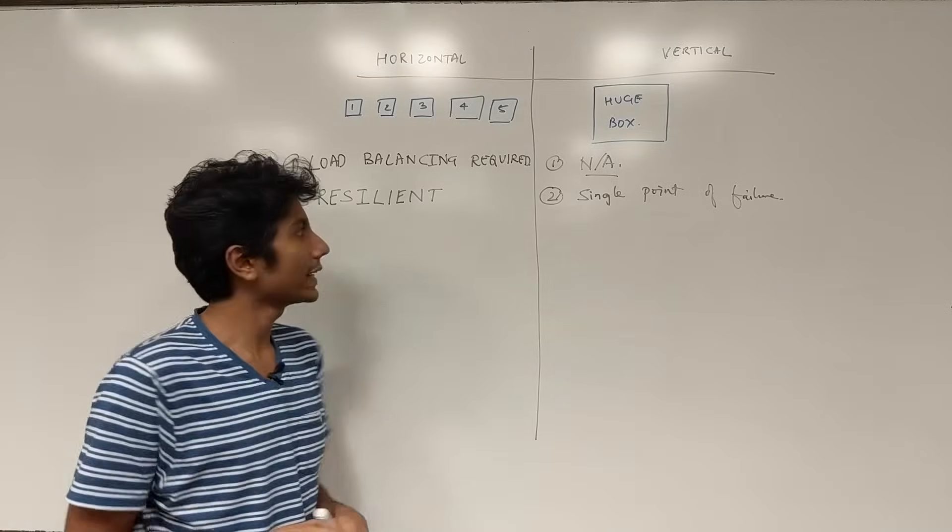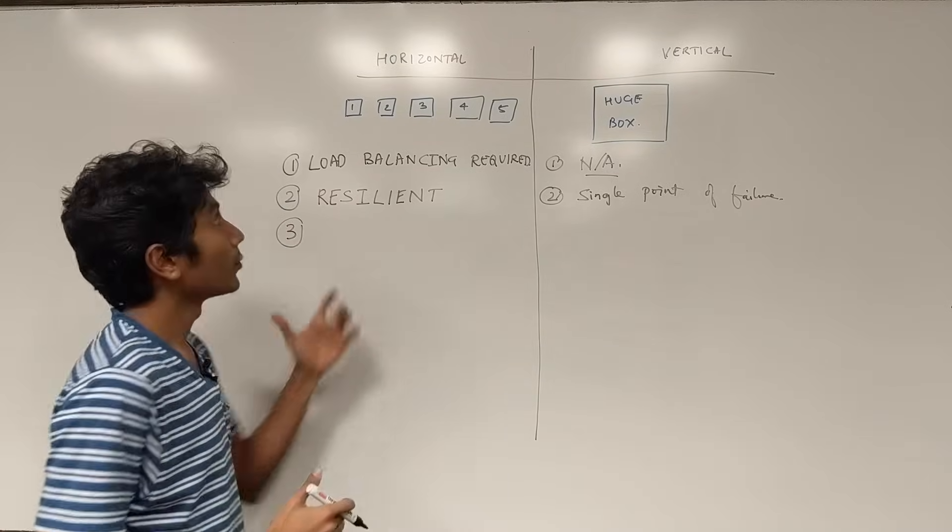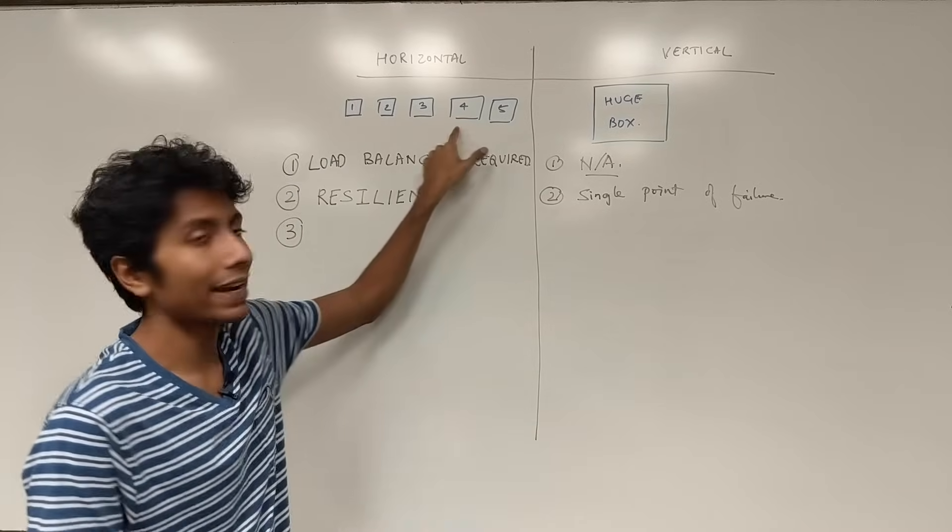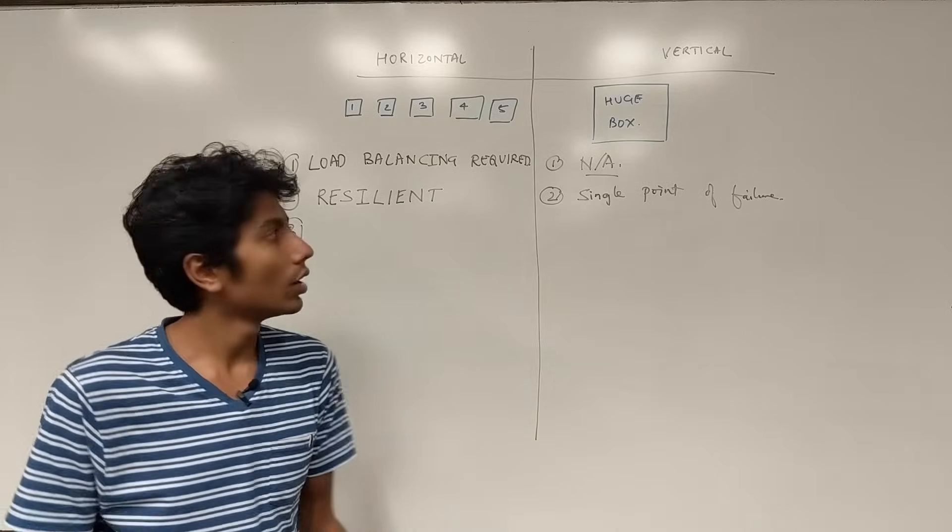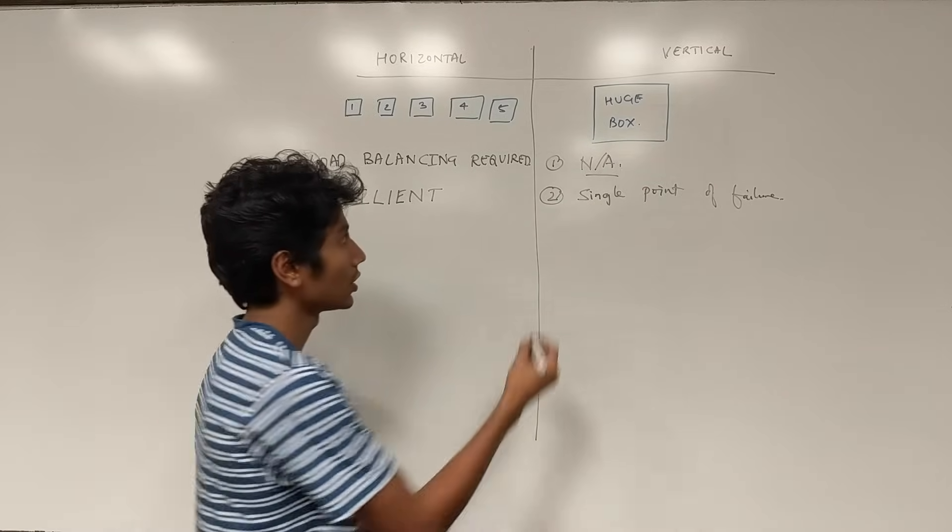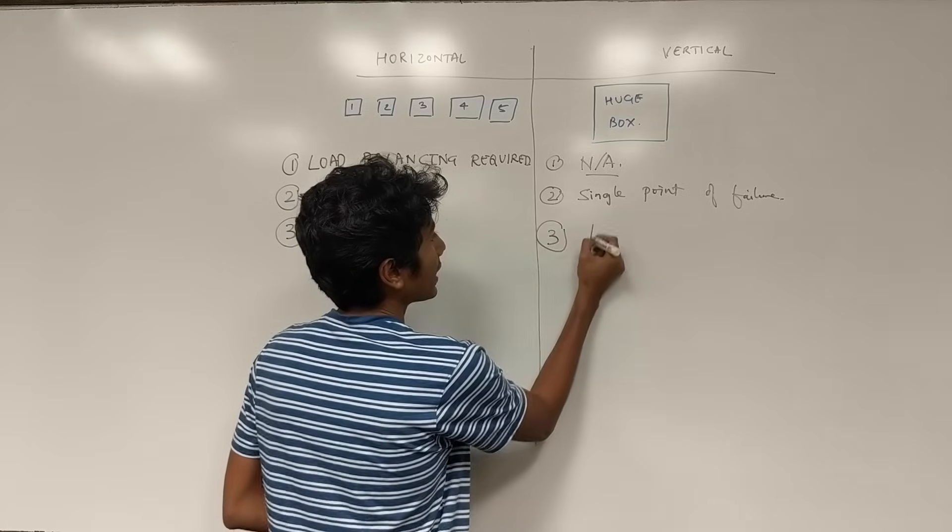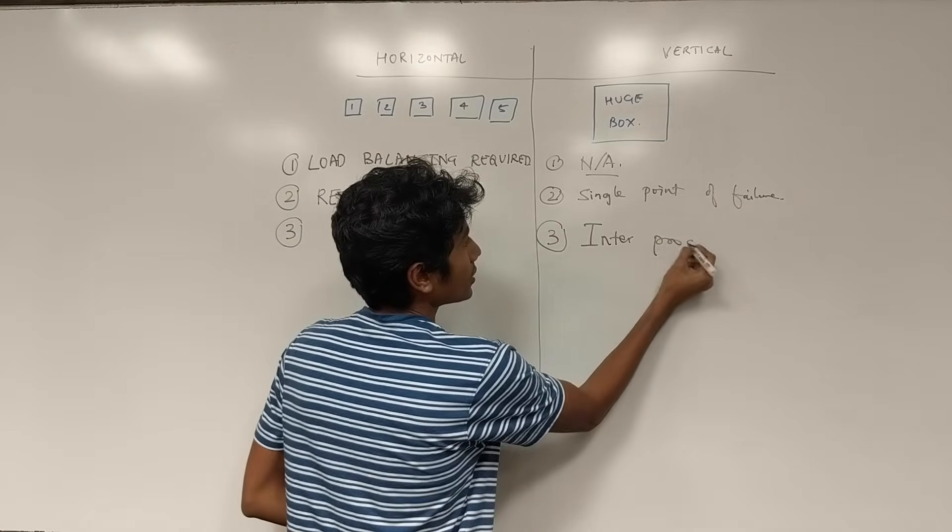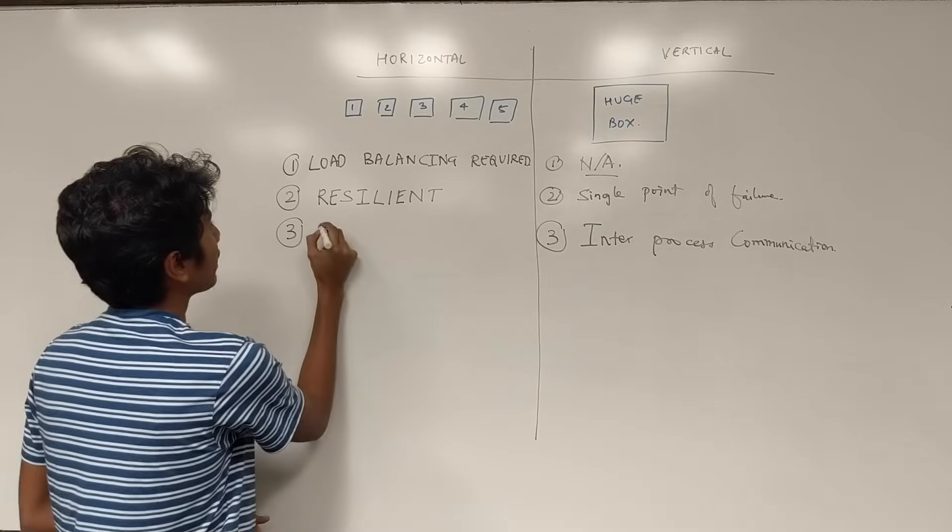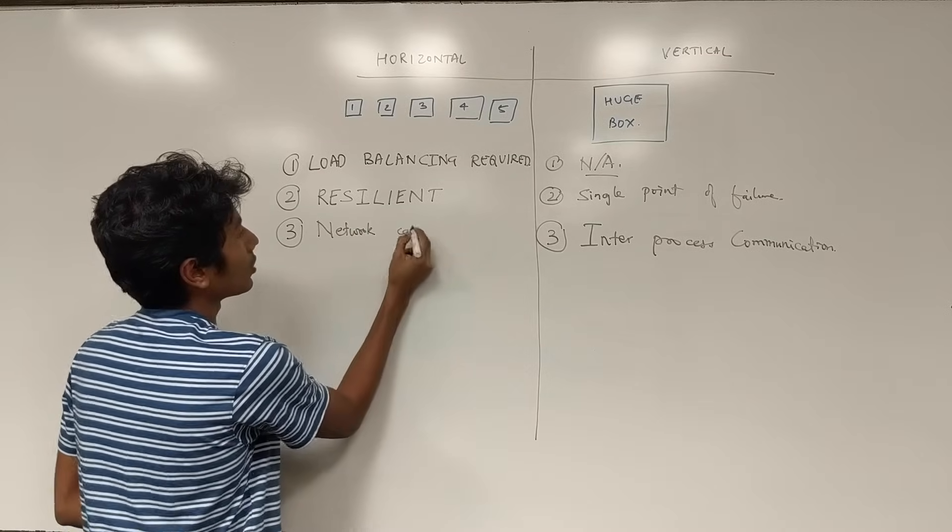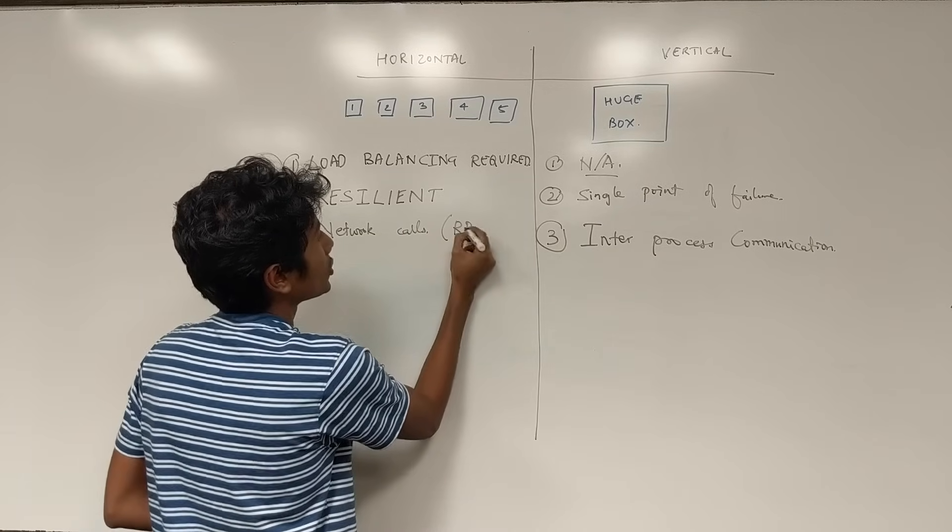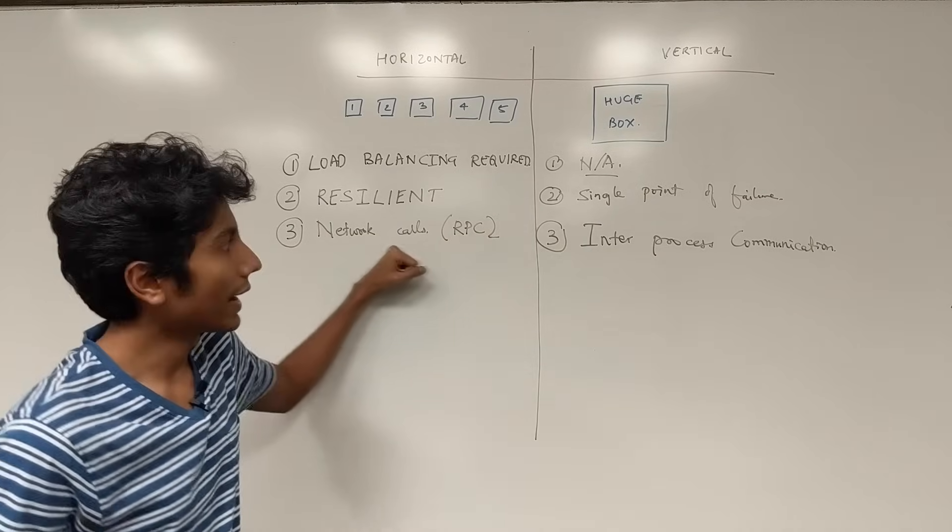The third thing to note is that all the communication that we have between the servers will be over the network, and network calls are slow—it's I/O. While over here you have inter-process communication, so that is quite fast. So here there is inter-process communication, while over here we have network calls between two services. So that is remote procedure calls. So this is slow and this is fast.